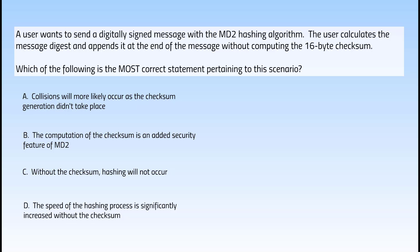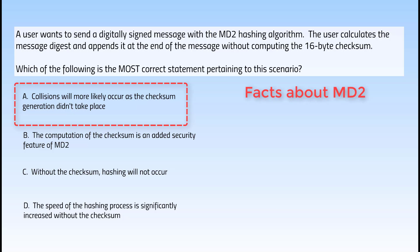Which one is the correct answer? You can pause the video and think about it before I give the answer. The correct answer is A. MD2 is vulnerable to a birthday attack. Collisions will more likely occur as the checksum generation didn't take place — this is a fact.